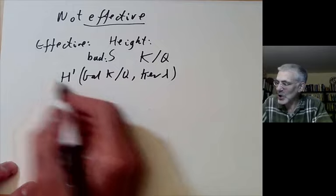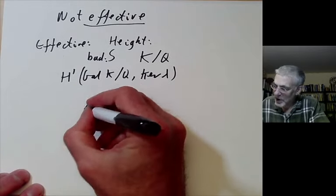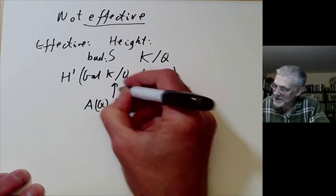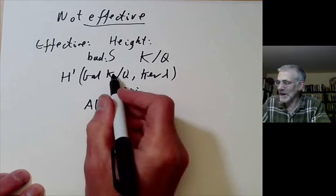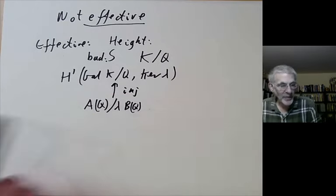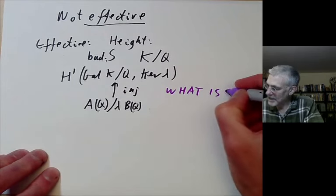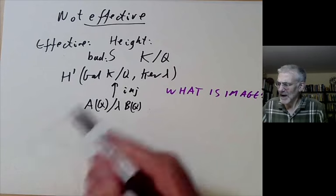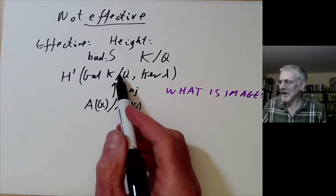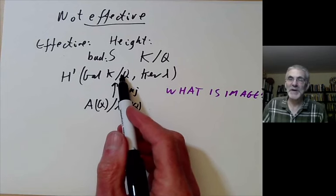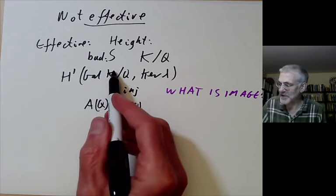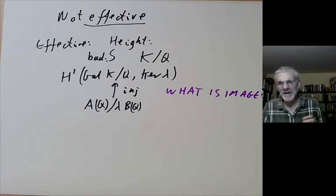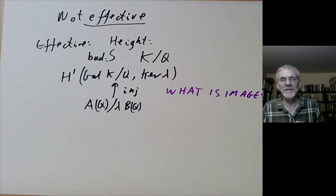The problem arises when we're looking at A(Q) over lambda B(Q), and we had an injective map from A(Q) into this group here. The problem is, what is the image? Well, what's the problem, you say? If something is in the image, it's actually quite easy to show it's in the image, because you can just calculate until you find a point mapping to it. The problem is, if a point of this group isn't in the image of this group, then it's not clear if you've got an algorithm to solve this problem.